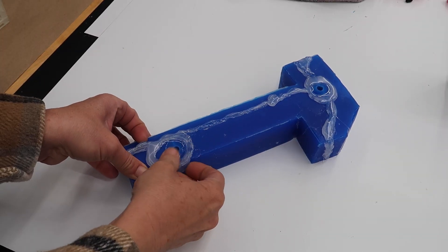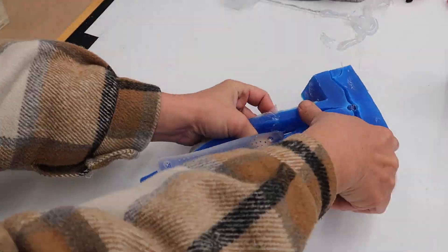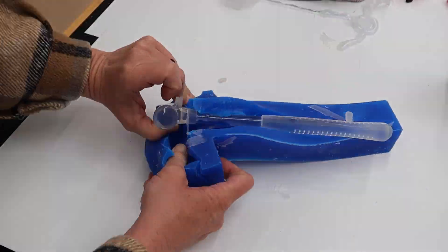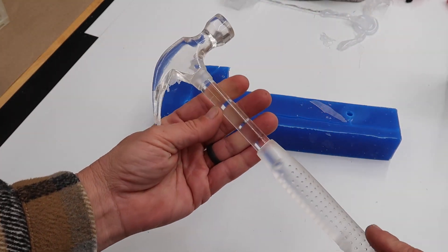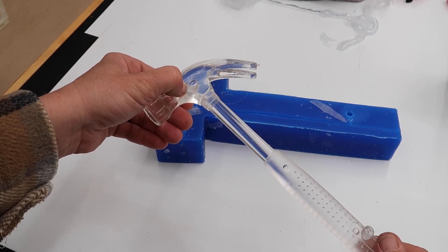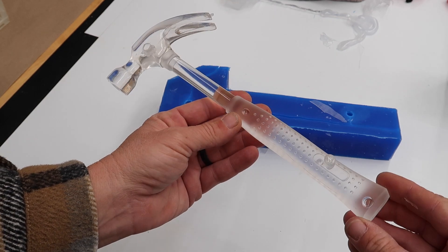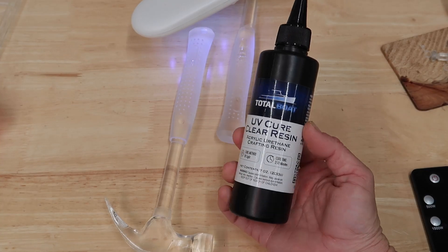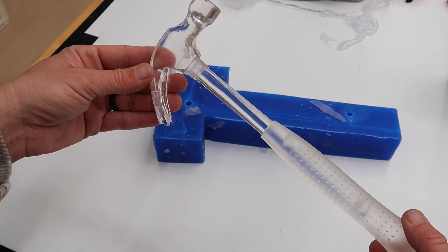Okay, let's demold the hammer. I mean, not bad. Small air bubble right there, right there and right there. But I can be happy with that. I can fill that with UV resin.